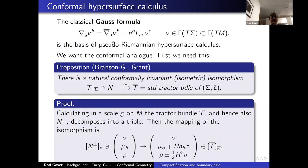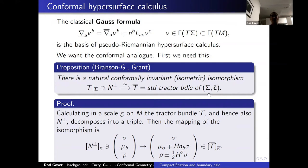We want a conformal analog of the Gauss formula, which will turn out to be important. You immediately see a problem: we used the fact that the tangent bundle to the hypersurface sits naturally inside the ambient tangent bundle, and we need an analog of that. We have a submanifold Σ inside a conformal manifold with an induced conformal structure. It has its own tractor connection and tractor bundle, but we also have an ambient tractor bundle. To get a formula similar to Gauss, we need to know how those two tractor bundles are related.